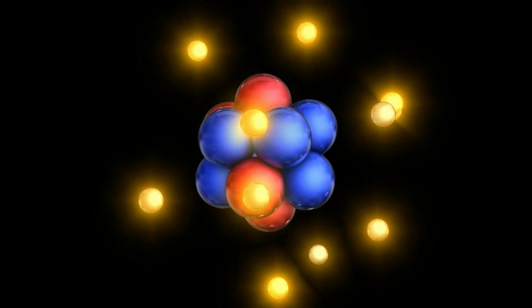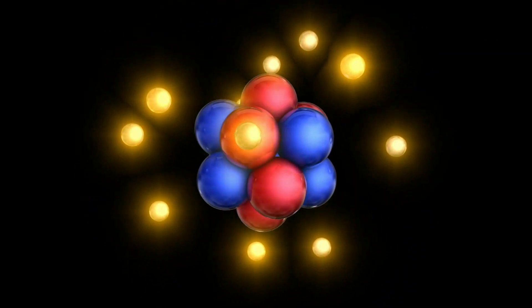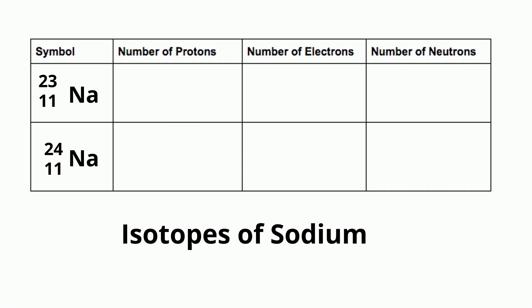To illustrate this, let's look at the following sodium atoms. These atoms are isotopes, or atoms with the same number of protons, but with a different number of neutrons.